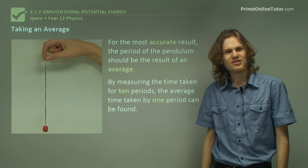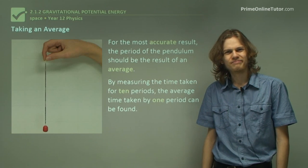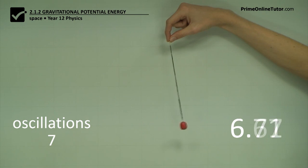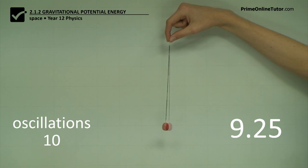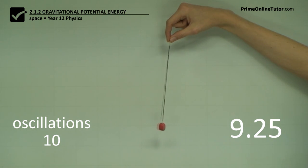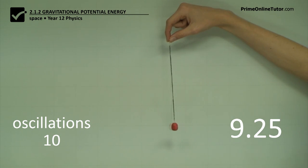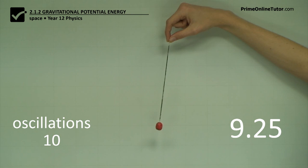So let's try this experiment, shall we? [Counts 10 oscillations.] Now that we have the time it takes for the pendulum to oscillate through 10 periods, we can divide this number by 10 in order to find just a single period of the pendulum. And from this, we can calculate gravitational acceleration.